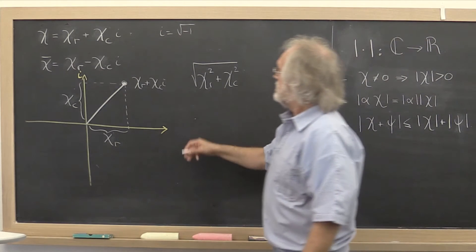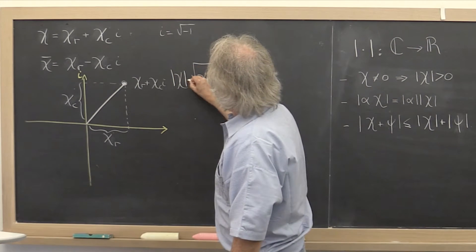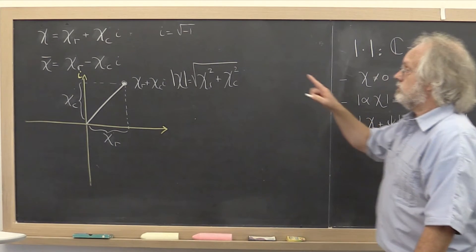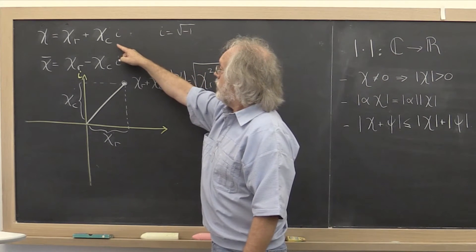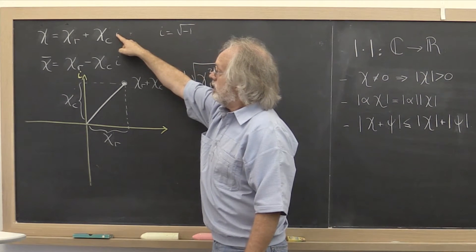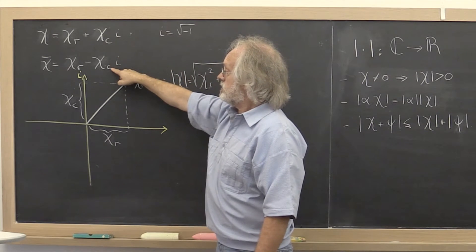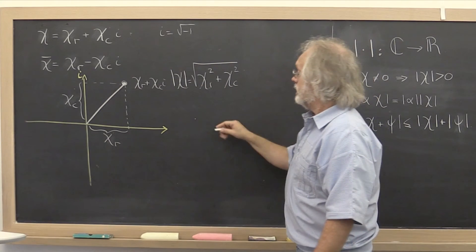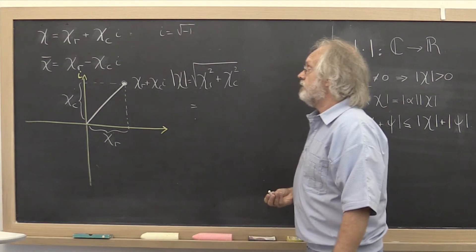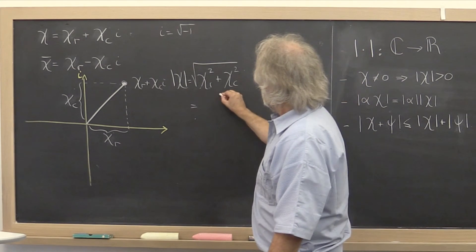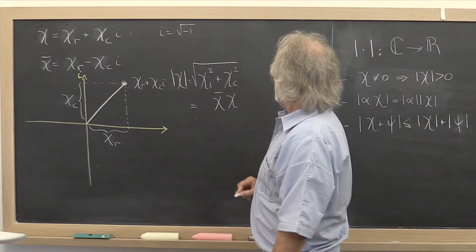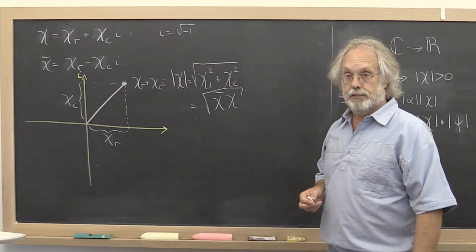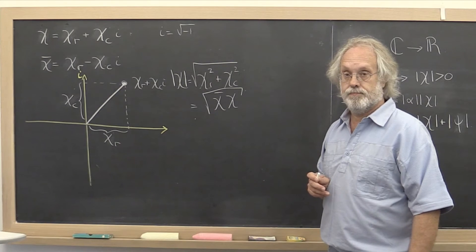So, this is the absolute value of chi. Now, just as a little side note, notice that if you multiply the complex number times its conjugate, you get the square of this right here. So, an alternative way of computing the absolute value of the complex number is to multiply the conjugate of chi times chi, and then taking the square root of that. And that can be easily checked.